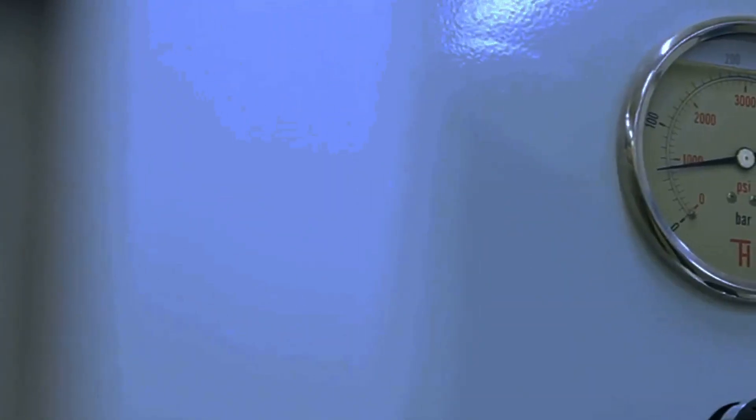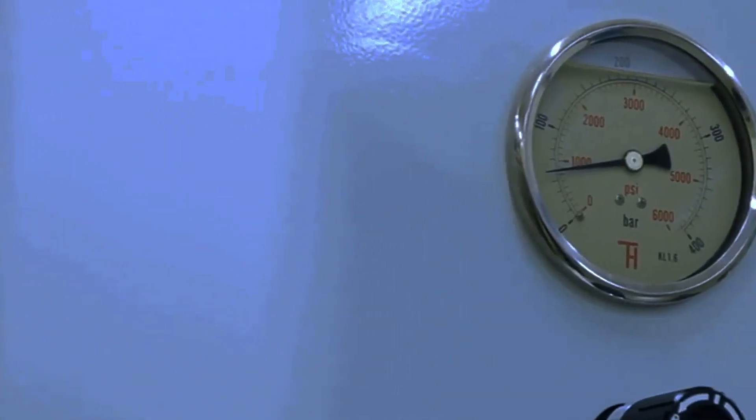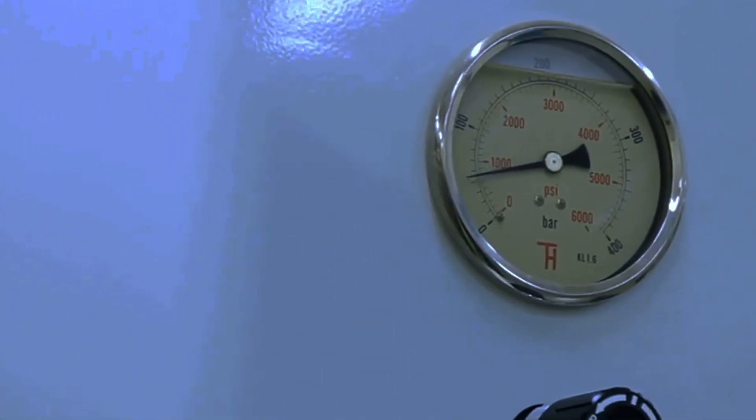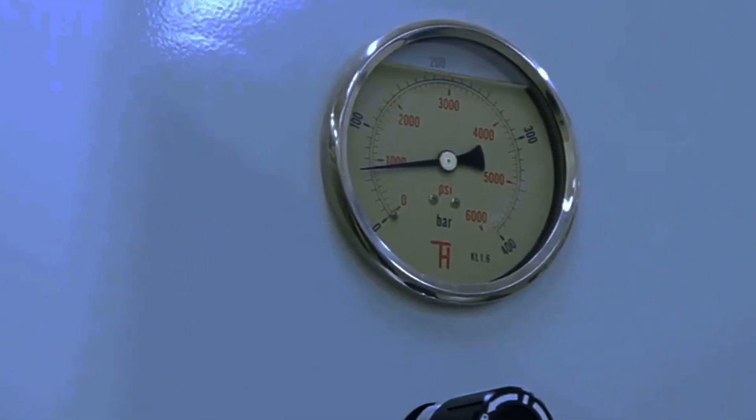Gauge theories impose constraints on the laws of physics because any changes induced by a gauge transformation must cancel out in observable terms.